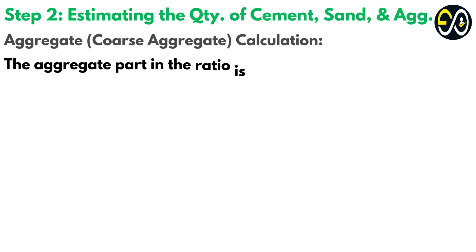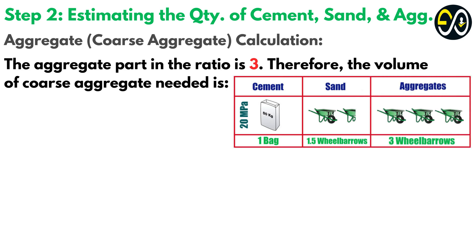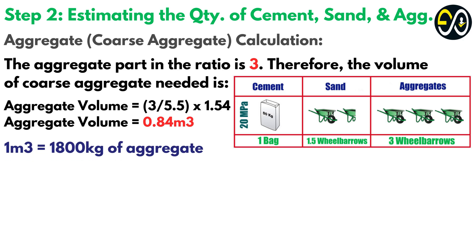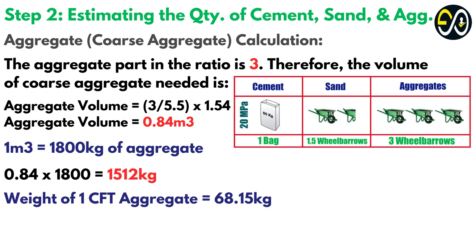The aggregate part in the ratio is 3. Therefore, the volume of coarse aggregate needed is: Aggregate volume equals 3 divided by 5.5 times 1.54, which equals 0.84 cubic metres. One cubic metre equals 1,800 kilograms of aggregate, so 0.84 × 1,800 equals 1,512 kilograms. The weight of one cubic foot of aggregate equals 68.15 kilograms, so 1,512 divided by 68.15 is approximately 22 cubic feet.